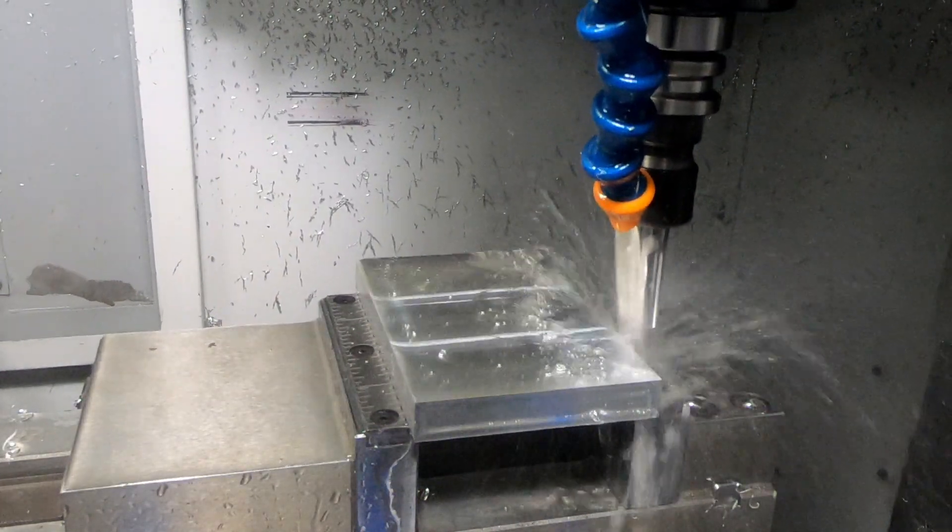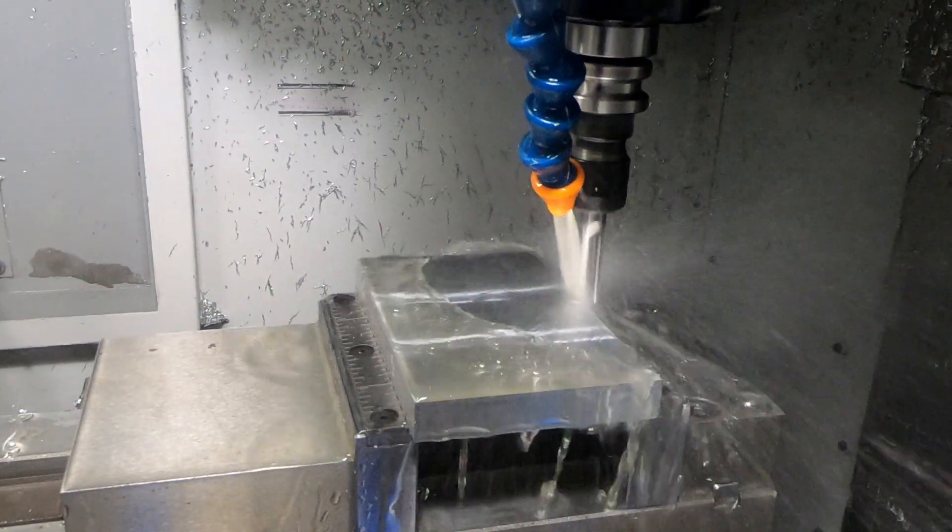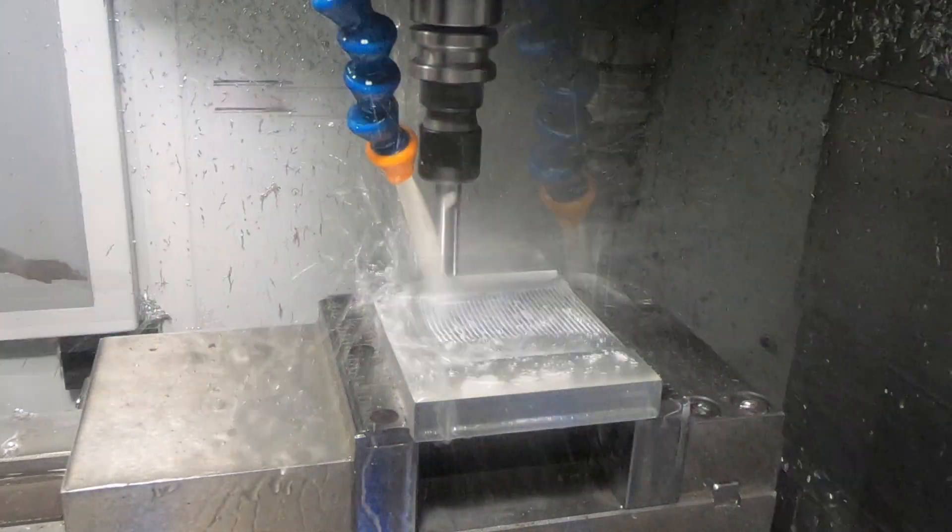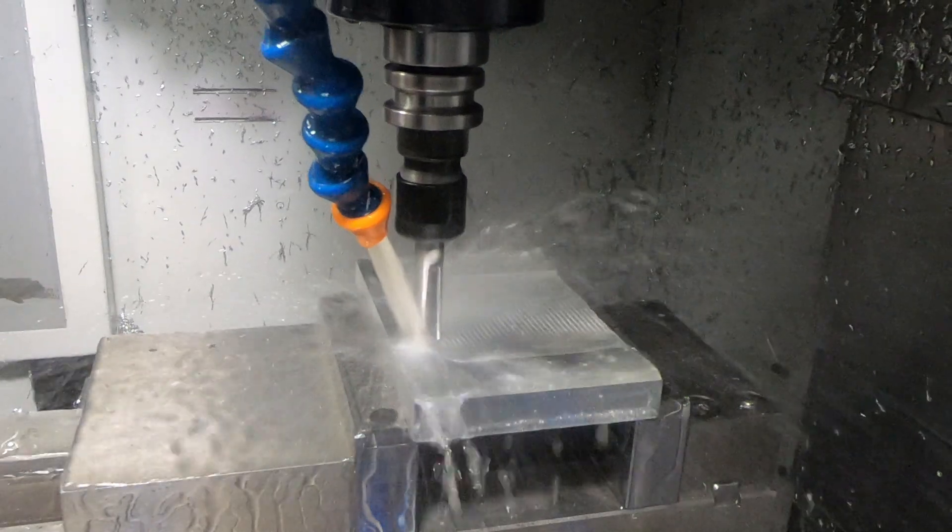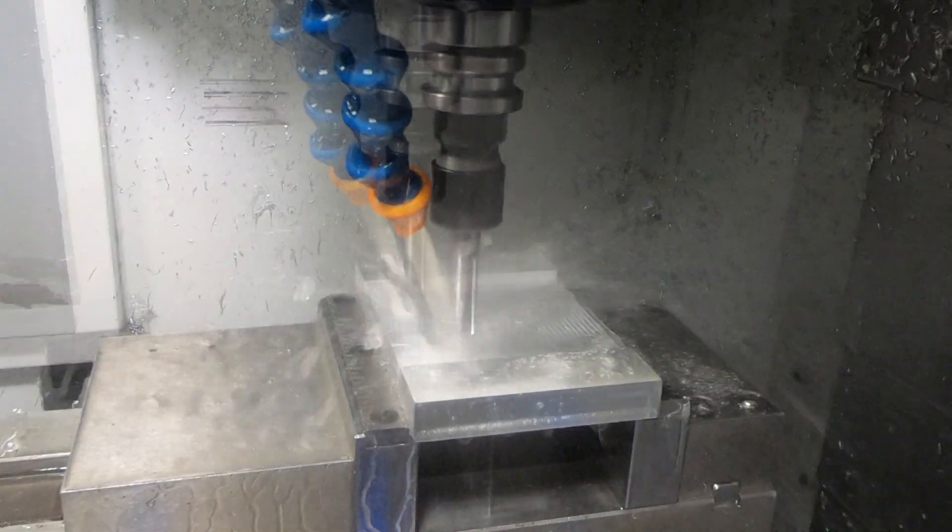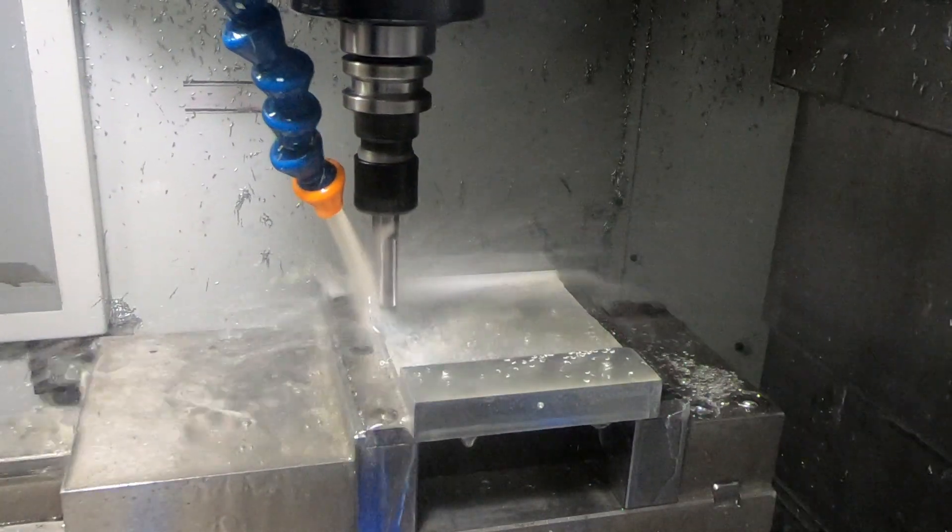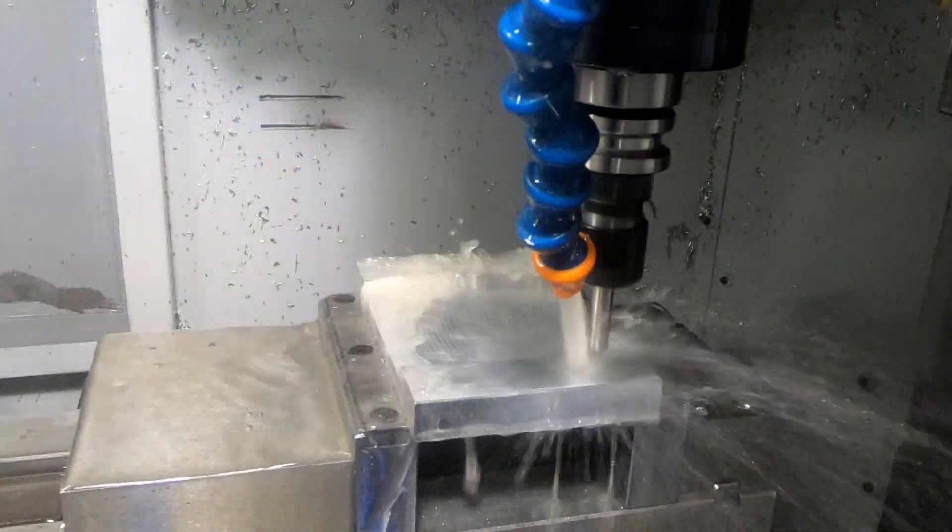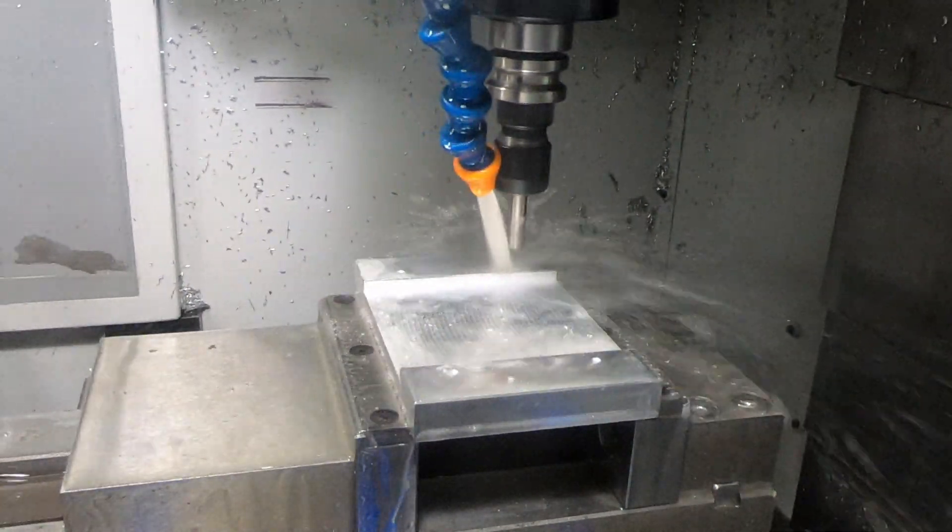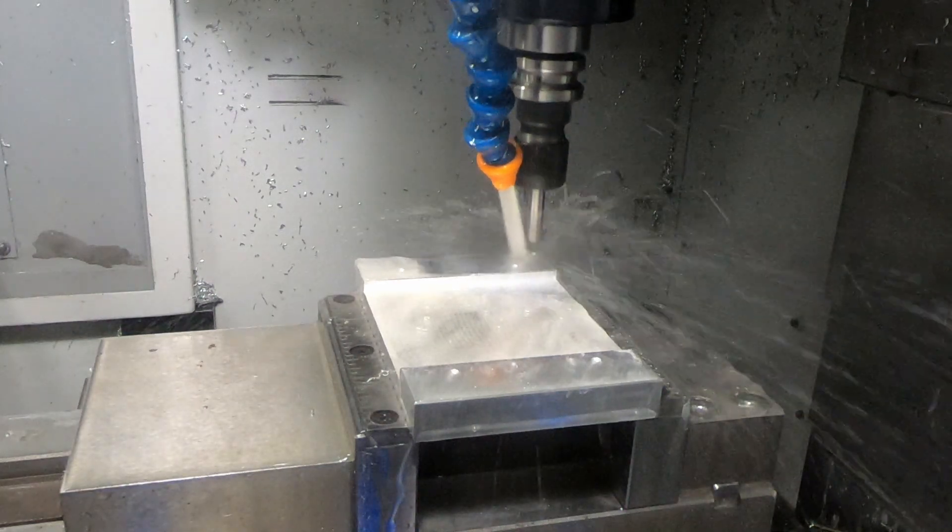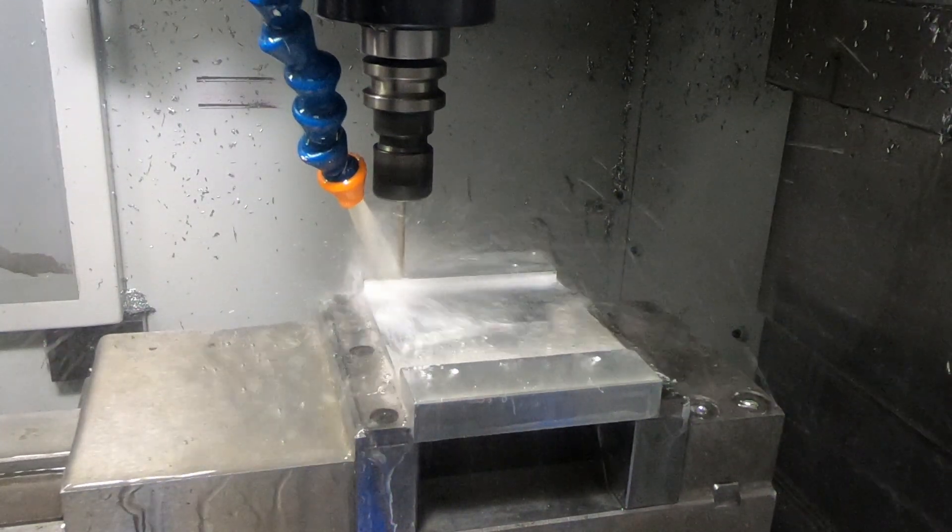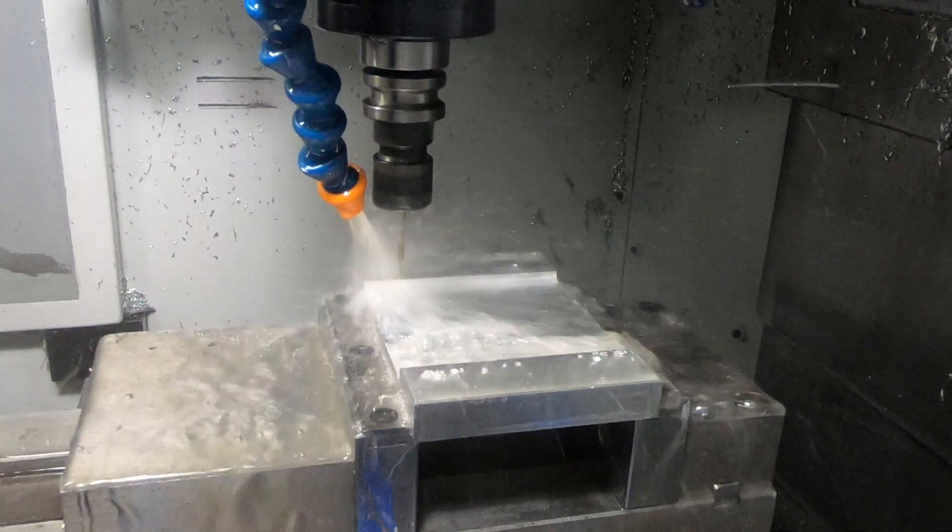This is milling a pocket on the fixture that I'm going to use to hold the faceplate, so I can mill the outer perimeter of the faceplate. The pocket needs to be deep enough to hold the backplate that is on the faceplate. And it's just a pretty simple pocket. And then there are the four holes that are drilled in it for the 6-32 screws that I'm going to use to hold the faceplate in place on the fixture while I mill the perimeter.